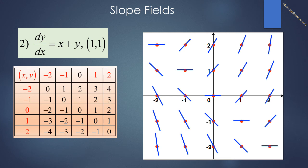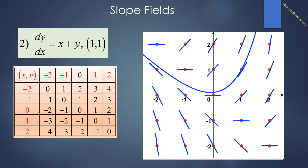Here is the slope field around the origin. Notice again that the slopes are positive above the line y = -x and negative below that line. The slopes are 0 along the line y = -x. Here is an approximation of the specific solution going through the point (1, 1). As we start from that point and go to the right, the curves are getting steeper. As we go to the left, the curve is getting shallower, becomes 0, and then becomes negative. It seems that the curve will become asymptotic to the line y = x - 1.